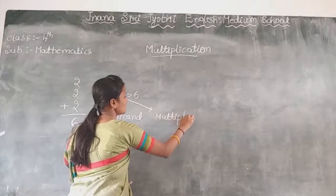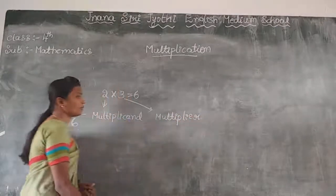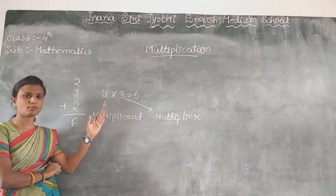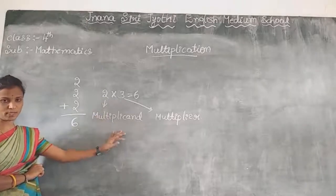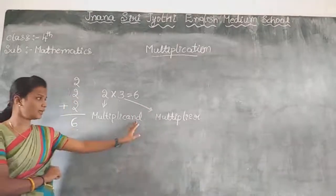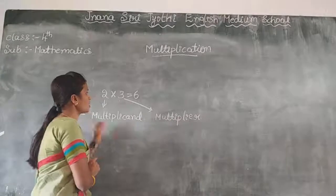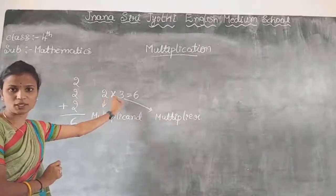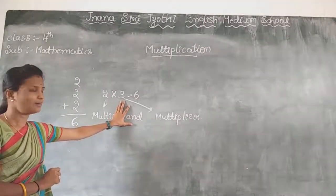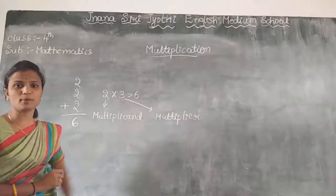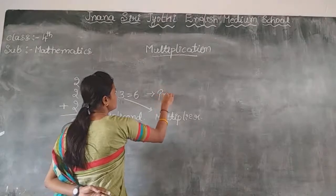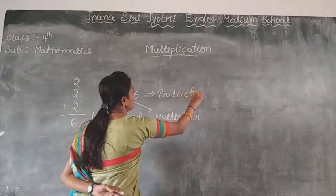And 3 is called as the Multiplier — the number by which you multiply. By multiplying these two numbers, you get the answer. That answer is called the Product.